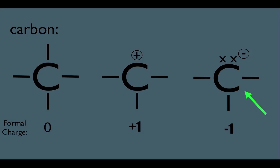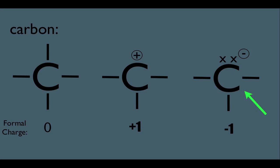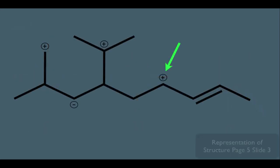So, going back to our structure here — if this carbon has a positive formal charge, it must have three bonds: one here, one here, which means it must have one more bond, and that bond must be to a hydrogen. So this carbon actually only has one hydrogen connected to it, and we determine that by thinking about its formal charge.